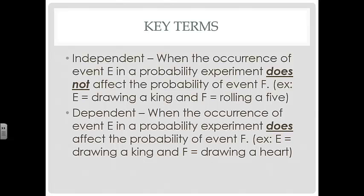Dependence is when the occurrence of an event in a probability experiment does affect the probability of event F. For example, if I draw two cards one at a time from a standard deck of cards, does drawing a king affect the probability of drawing a heart or any other card for that matter? Yes. When I draw that first card, I've now changed the probability for that second card.